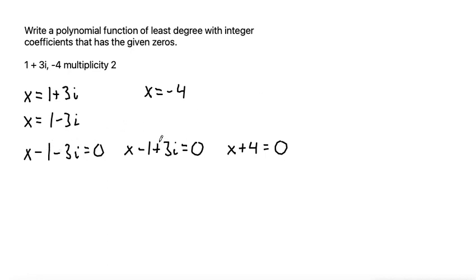So now we can write each of these zeros as the factors of our polynomial function. So we can write them as x minus 1 minus 3i times x minus 1 plus 3i, and then x plus 4. Because it is a multiplicity 2, we have to square its factor. So this is our polynomial function written in factored form, but we're likely supposed to write that in standard form. So let's distribute all of this out.